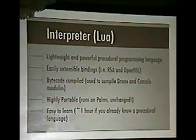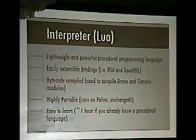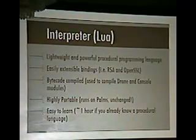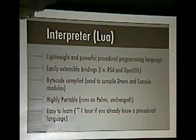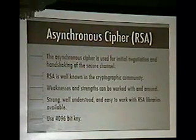Why did we pick Lua? It is a lightweight and powerful procedural language. It is easily extensible with bindings — we have created bindings for RSA and OpenSSL. It is bytecode-compiled, which is a plus when you're trying to deploy code. It is highly portable, written in straight ANSI C, and has run on Palm Pilots without any changes. It is easy to learn — it takes about one hour if you already know a procedural language. Moving on: the asynchronous cipher is used for initial negotiation and handshaking of the secure channel.